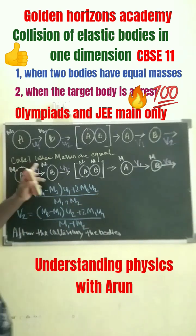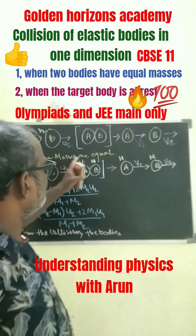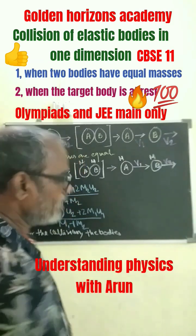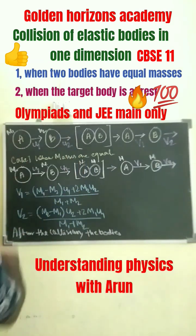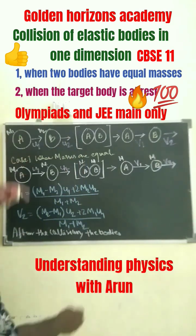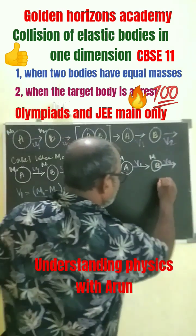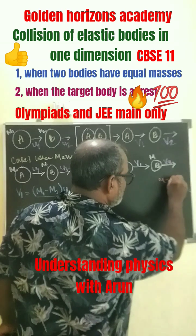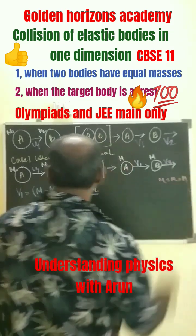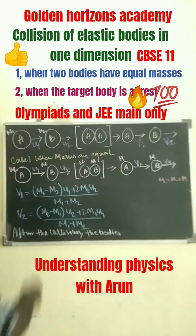Now Case 1: when the masses are equal, what happens? When the masses are equal, that means M1 equals M2. Let us take M1 equals M2 equals M, and see what happens.